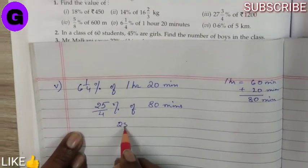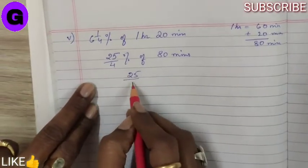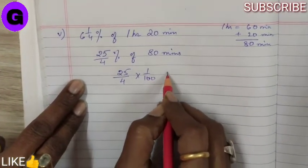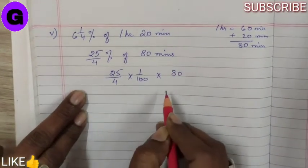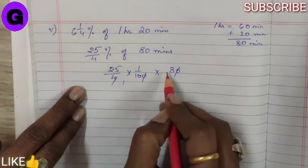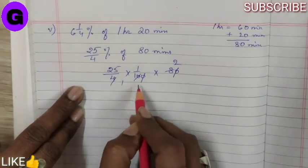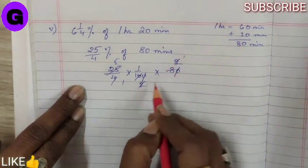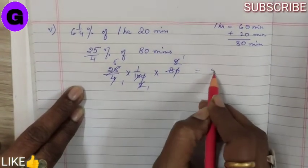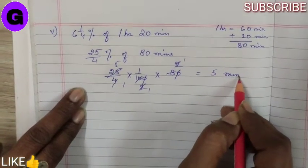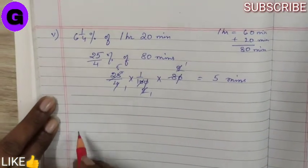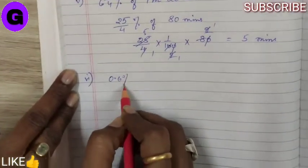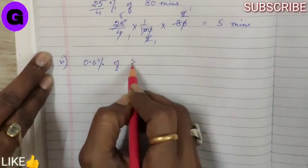Since 25/4 is a fractional percent, write it as 25/4 × 1/100 × 80. Cancelling: 4 into 80 gives 20, 20 into 100 gives 5, and 25 divided by 5 gives 5. Continuing the cancellations we get 0.5.